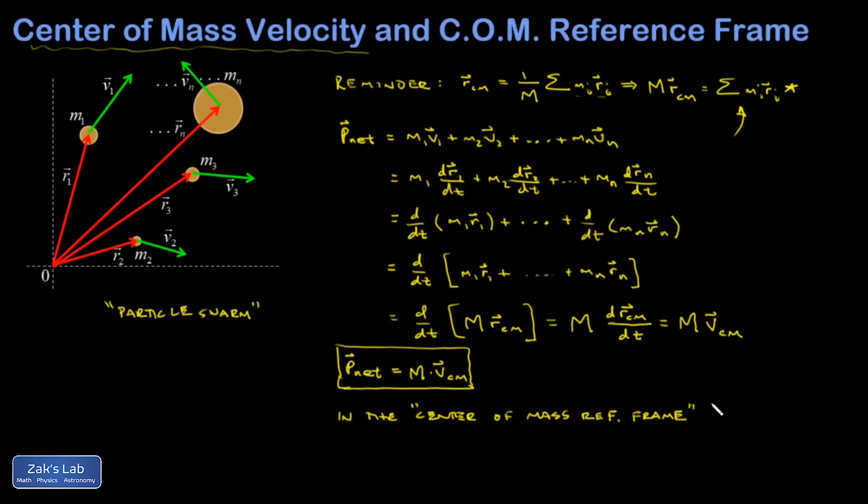well, in the center of mass reference frame, the center of mass velocity is zero. And therefore, the net momentum is zero. And that simplifies a lot of calculations. So in the center of mass reference frame, V center of mass is going to be equal to zero, which implies the net momentum of the system is going to be zero.